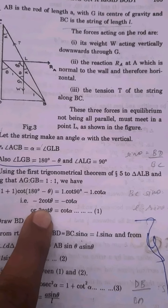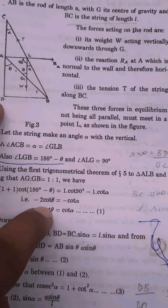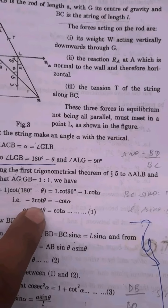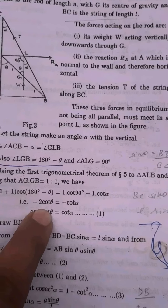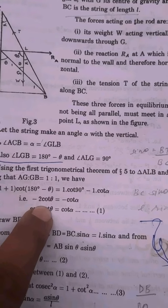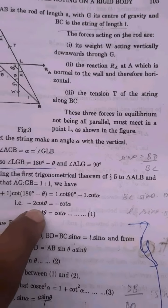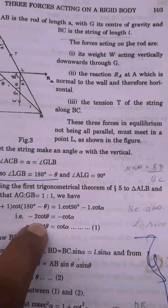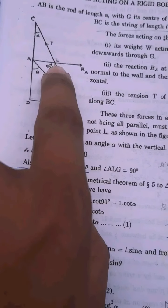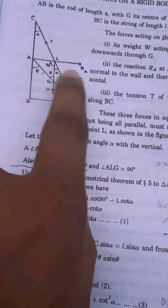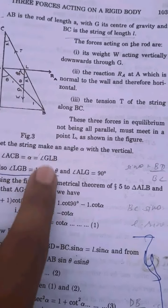These three forces are in equilibrium, not being all parallel. The three forces are concurrent - they are not parallel. Since they are concurrent, they will meet at a common point. So the reaction, the rod, and the string all meet at a common point.